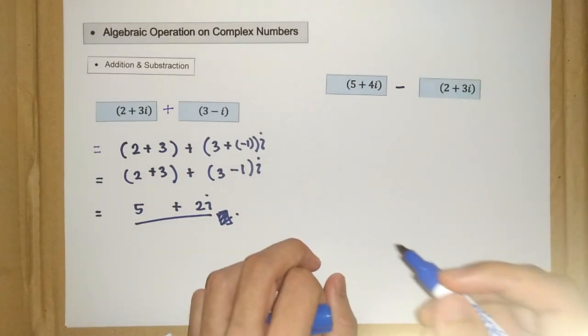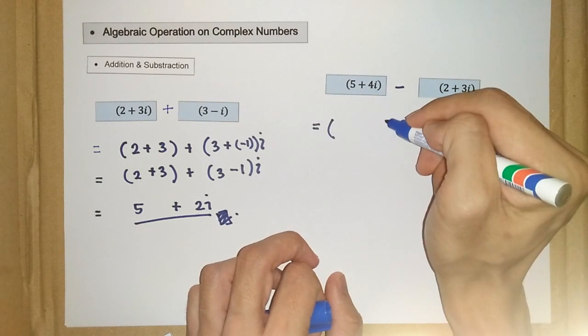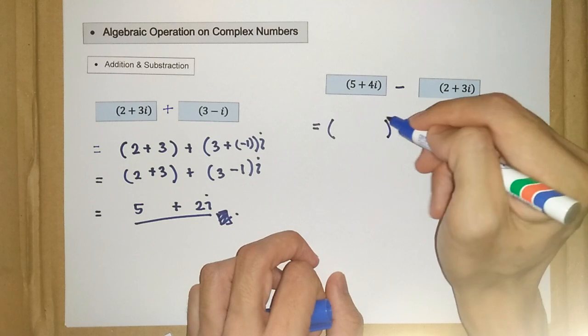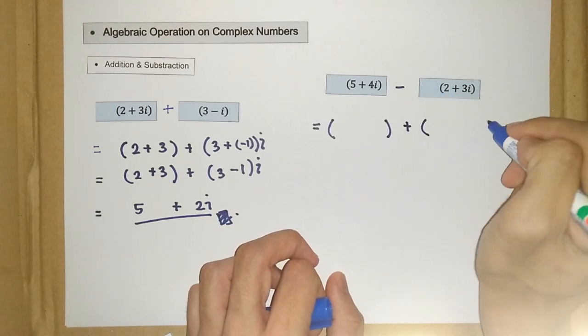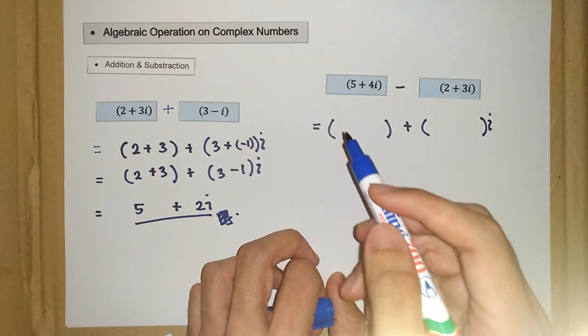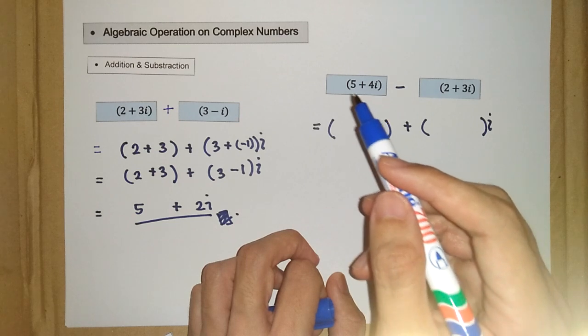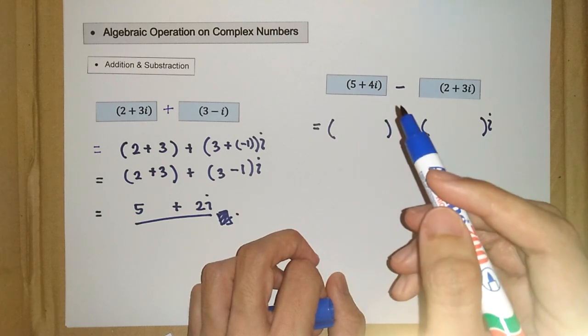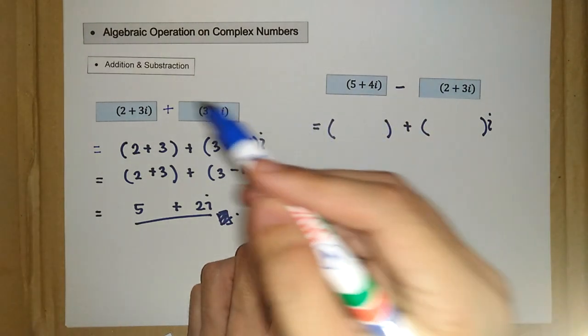What we do here is complex numbers take the form of real part plus the imaginary part i. So what we do is we subtract the real part and the imaginary part respectively. Again, it's just the same as addition.